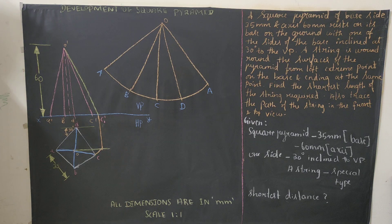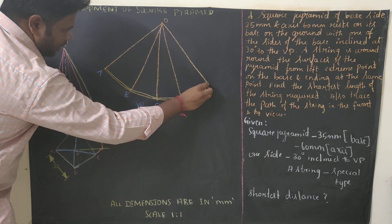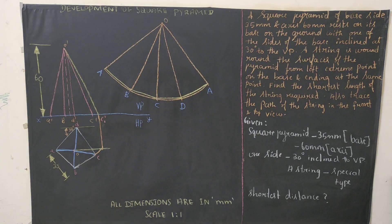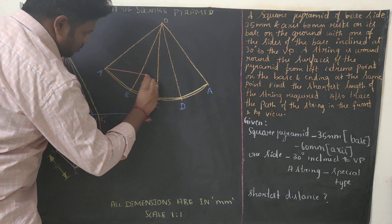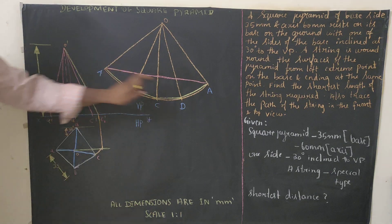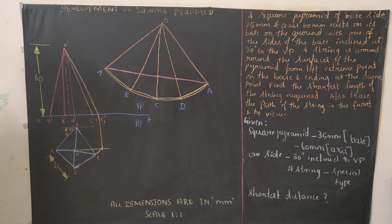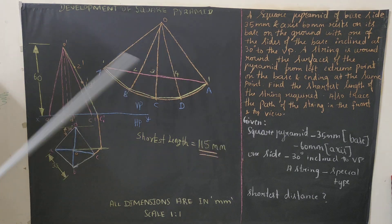On the development, join the slant edges A–B, B–C, C–D, D–A. Since we're finding the shortest string path, draw a straight line from the starting point A to the ending point A on the development. This straight line is the shortest length of the string. Measure it — you'll get approximately 115mm. Write: shortest length of the string = 115mm.